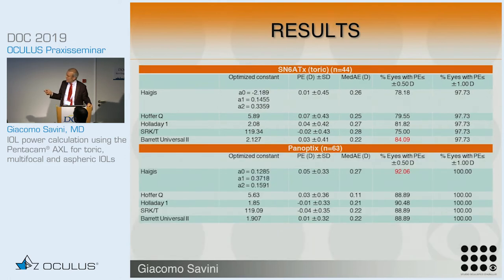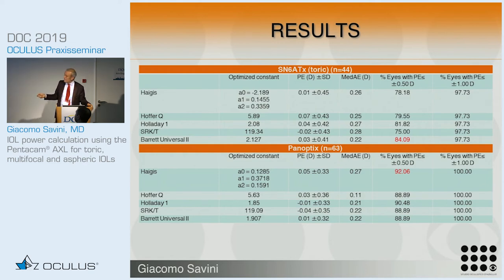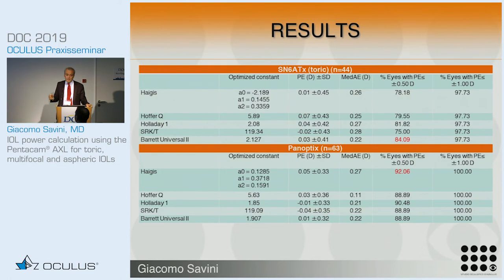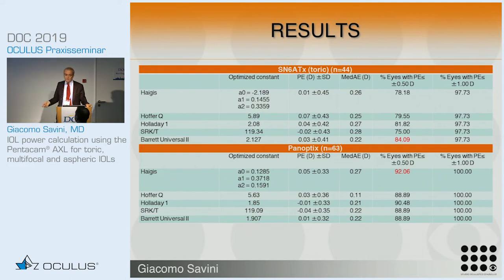The outcomes for the toric group were between 78% and 84%, again with Barrett number one. And for the PanOptix, I don't have a clear explanation, but these are the best numbers ever reported in the literature — close to 90%. In this case, number one is Professor Haigis with 92% of cases within half a diopter. With just 63 patients, the median absolute error is between 0.10 and 0.20 — a very good result for patients seeking spectacle independence with trifocal lenses.